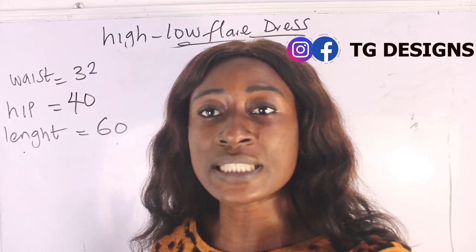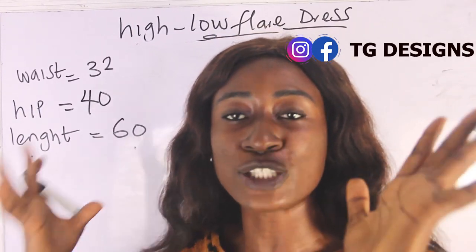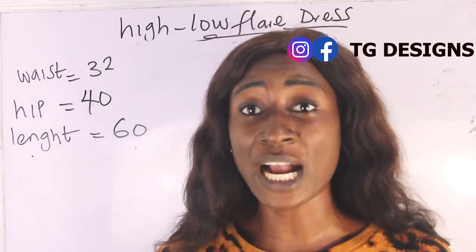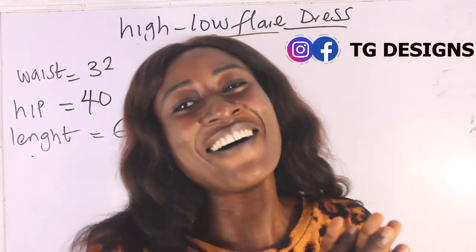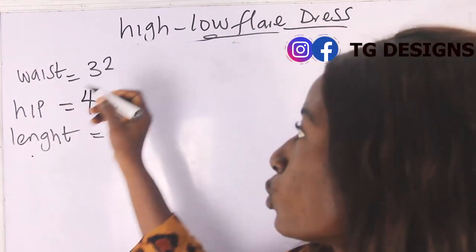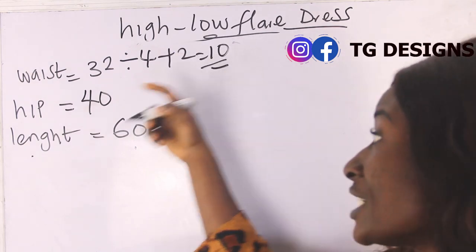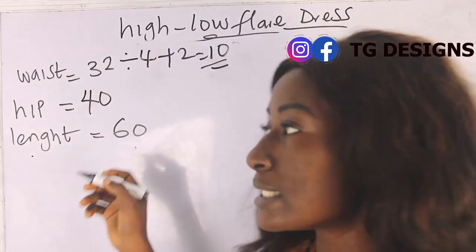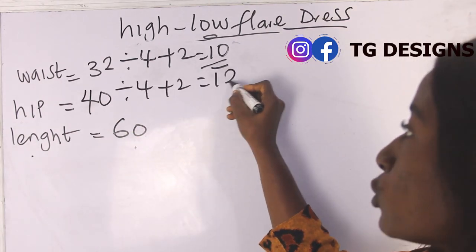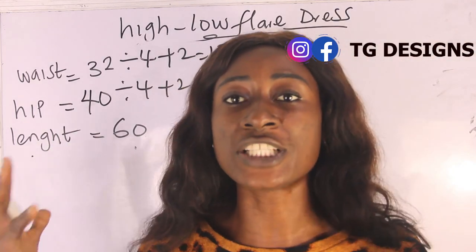The length starts from your shoulder measurement to your desired length, which is the back block. Let's go ahead and calculate our measurements. Our waist measurement is 32 — 32 divided by 4, plus 2, we have 10 inches. Our hip is 40 — 40 divided by 4, plus 2, we have 12 inches. Our length is 60 inches, from your shoulder measurement to your desired length.